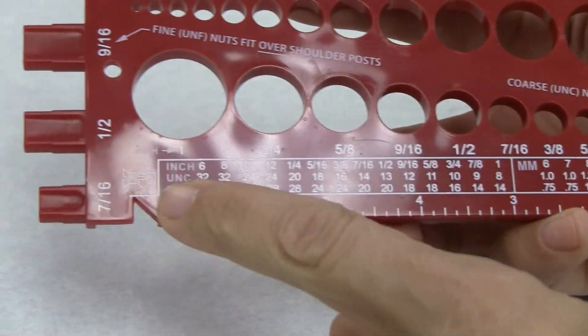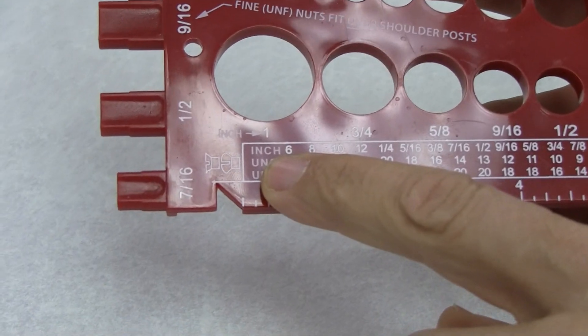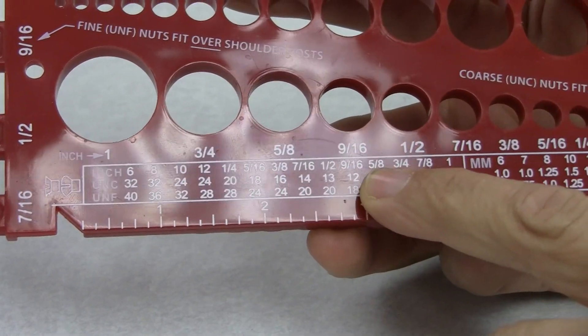If I want to verify that, I turn my gauge back over, and I go to the gauge on the bottom side here. I look at the inch mark, and I follow it across into where it says 5/8.